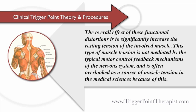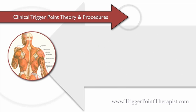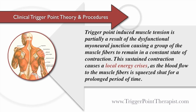The overall effect of these functional distortions is to significantly increase the resting tension of the involved muscle. This type of muscle tension is not mediated by the typical motor control feedback mechanisms of the nervous system and is often overlooked as a source of muscle tension in the medical sciences because of this. Trigger point induced muscle tension is partially a result of the dysfunctional myoneural junction causing a group of the muscle fibers to remain in a constant state of contraction.